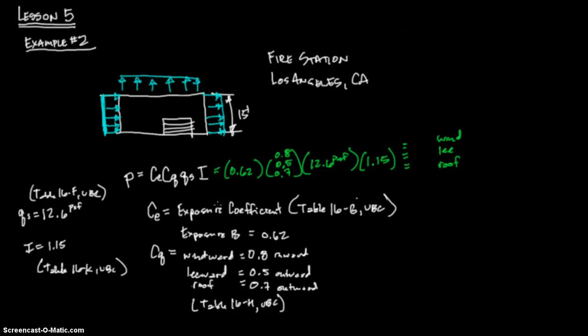So let's get the calculator out and let's go ahead and solve for what we want here. We have 0.62 times 0.8 first, times 12.6, times 1.15, equals 7.2. And that 7.2 is in pounds per square foot because that's going to be a pressure. So what I'm going to do is divide by 0.8 and multiply by 0.5, and I get 4.49, we'll say 4.5.